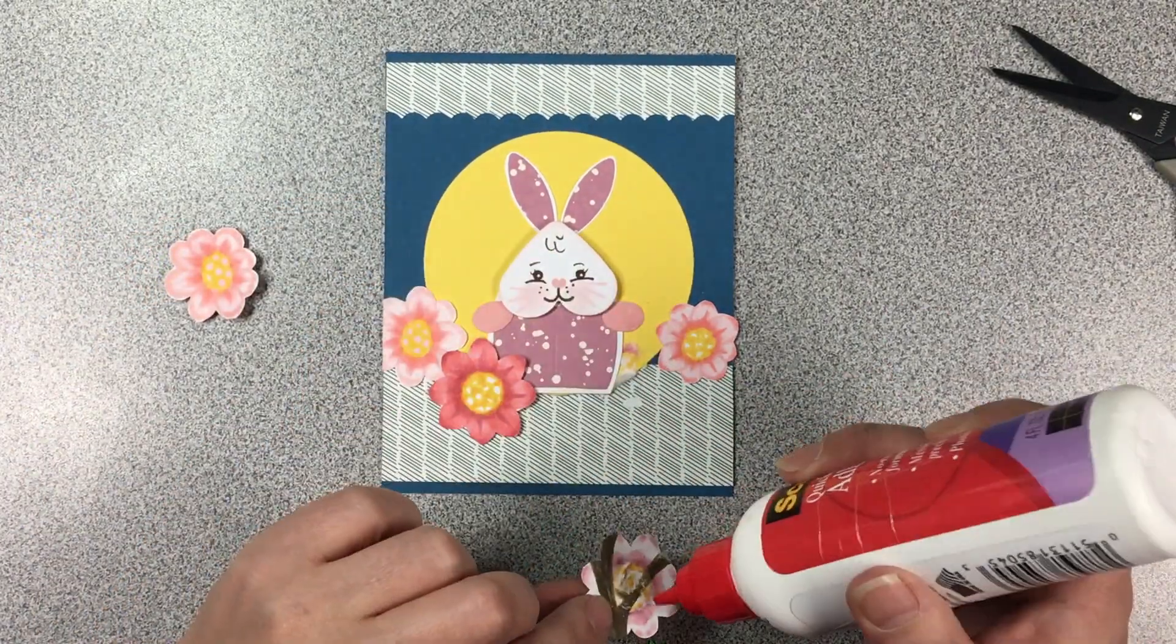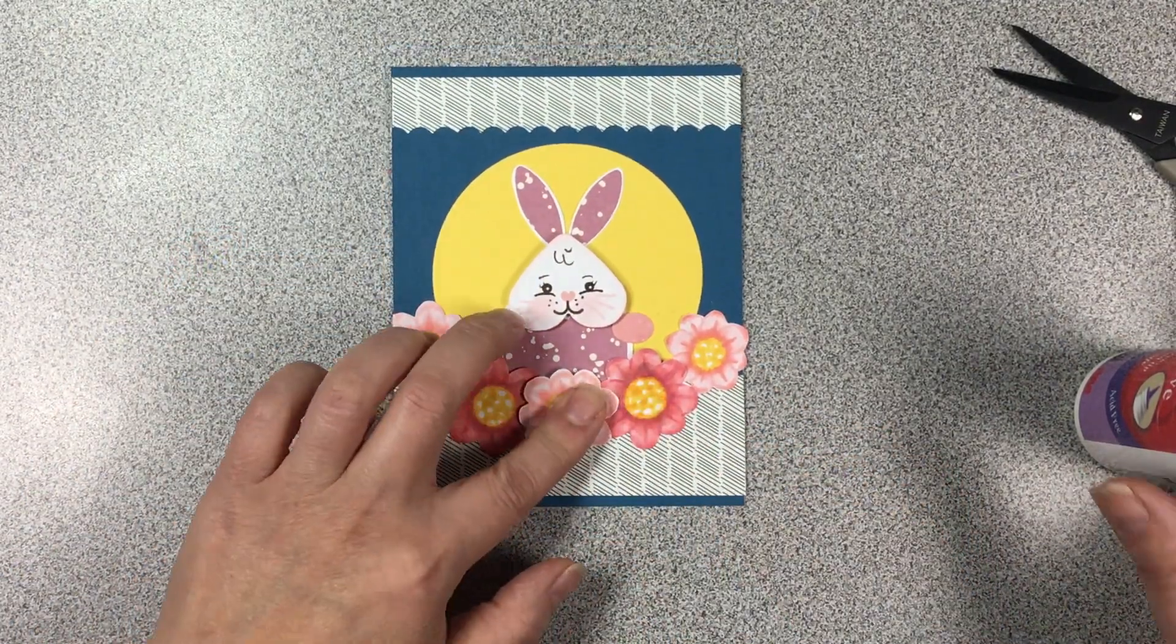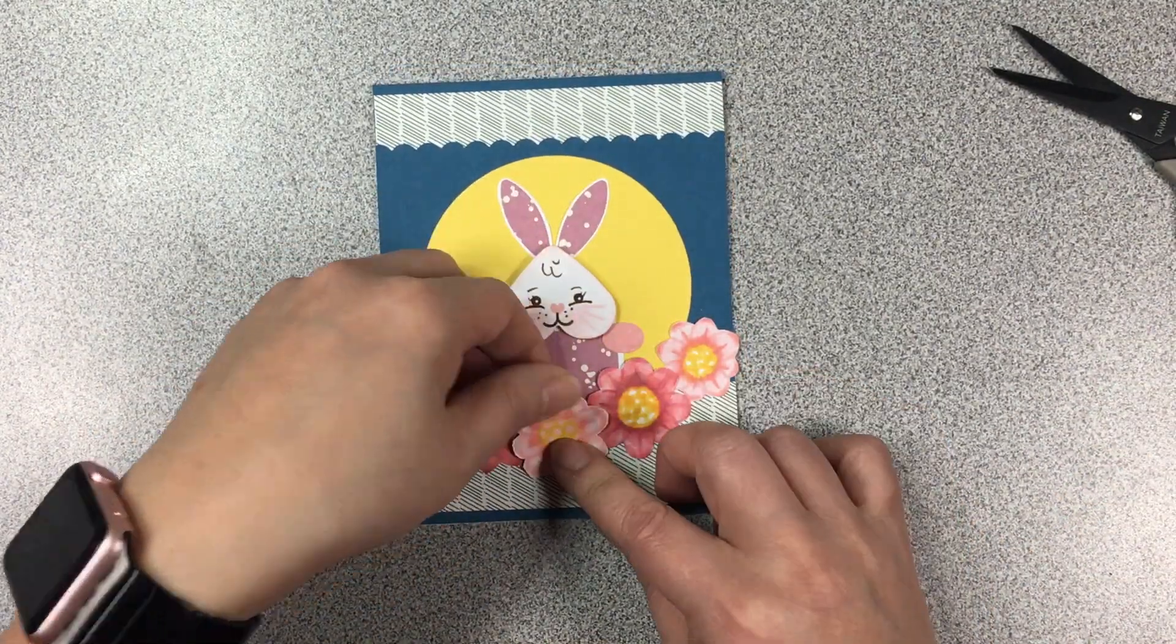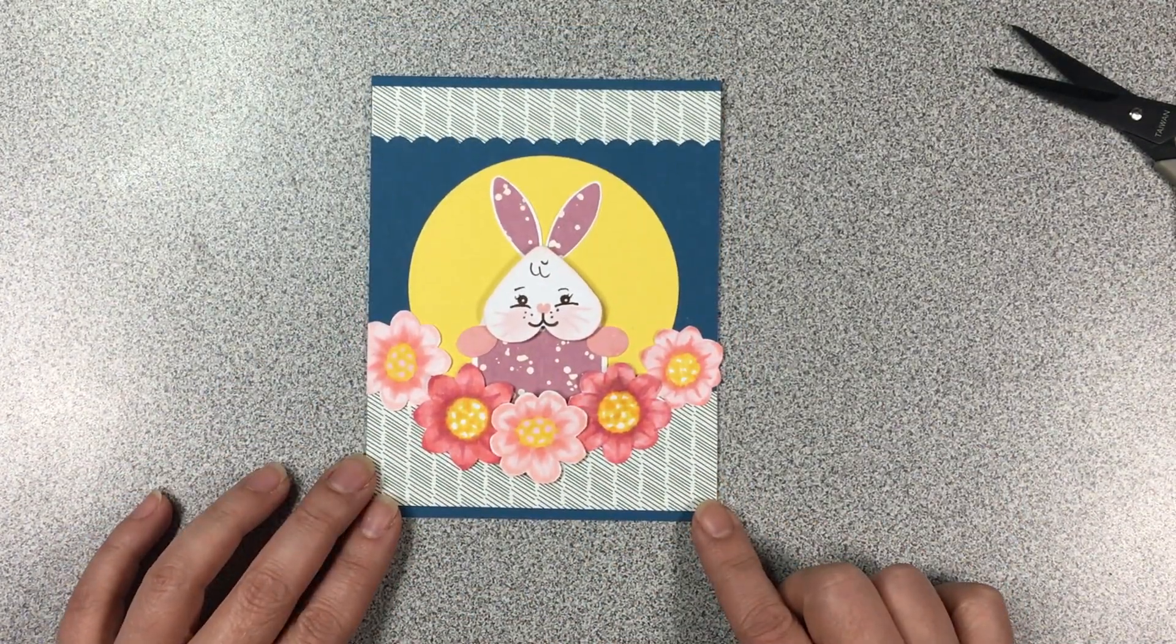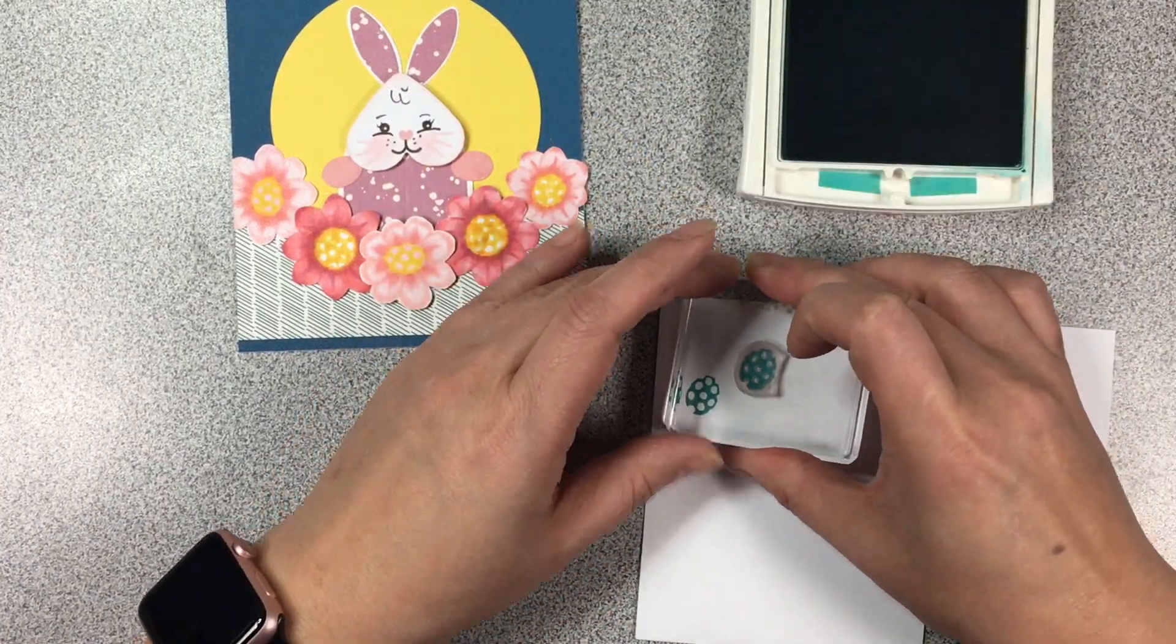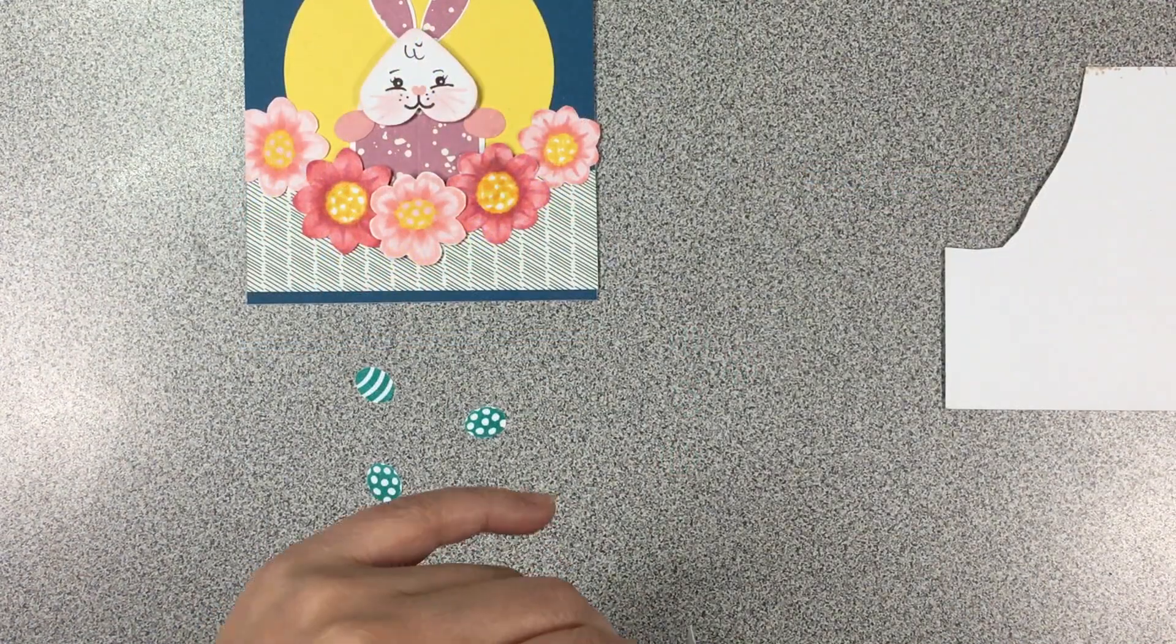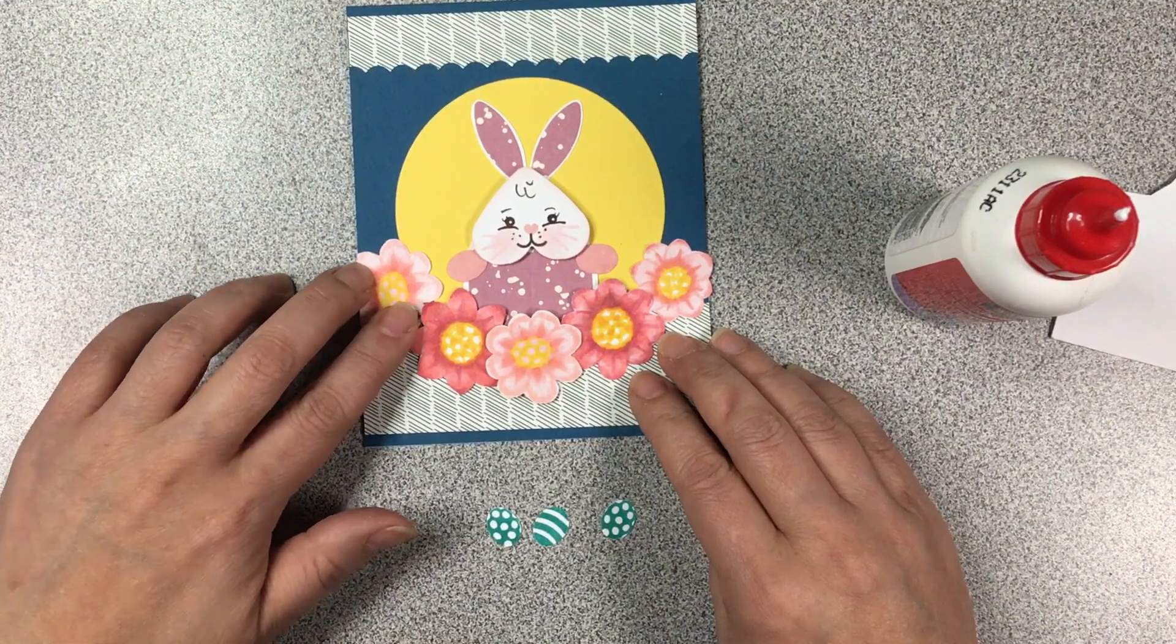And then we'll just re-glue down those flowers and those darker flowers were colored in with Flirty Flamingo and Blushing Bride. And here I am thinking that it needed something else because those flowers were kind of getting a bit lost. So with Bermuda Bay I stamped out the Easter eggs that came in the kit and just fussy cut them out and then just glued them around the flowers there just to give it an additional pop of color.